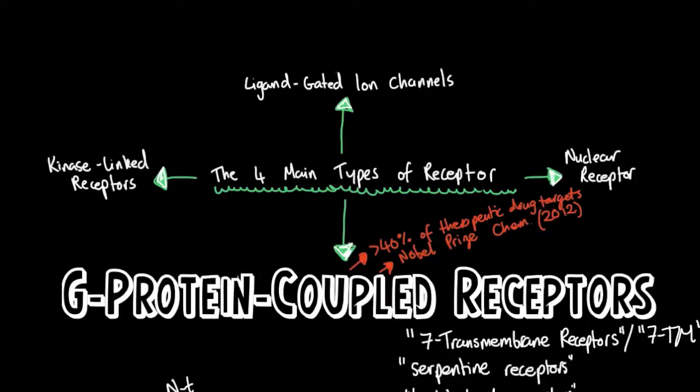When a ligand binds a kinase-linked receptor, it too undergoes a conformational change and it starts phosphorylating, because that's what kinases do — they phosphorylate. And for nuclear receptors, which are mainly found in the cytosol of the cell, when a nuclear receptor binds its ligand, it undergoes a conformational change and then it translocates to the nucleus, where it changes gene expression there.